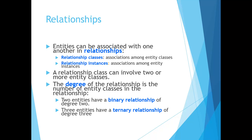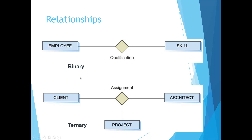A relationship class can involve two or more entity classes. The degree of the relationship is the number of entity classes in the relationship. If two entities have a binary relationship, it will be of degree two. If three entities have a ternary relationship, it will be of degree three. The figure shows examples of a binary relationship, such as between employee and skill, and a ternary relationship, such as client, project, and architect.